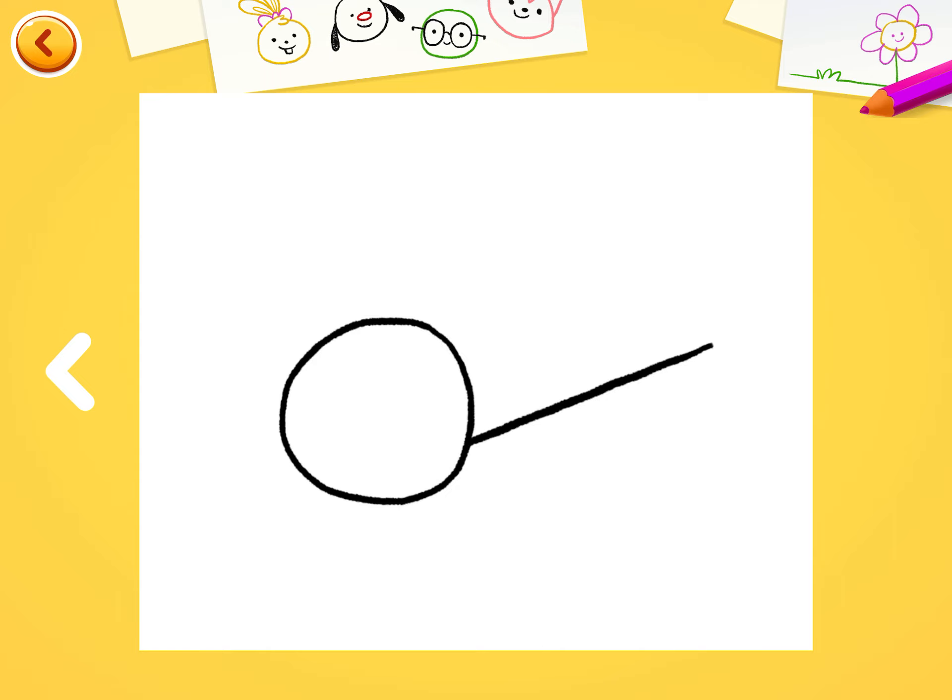After that, make two lines crossing each other, and close it with another line. Now, draw a line dividing the helicopter in two.